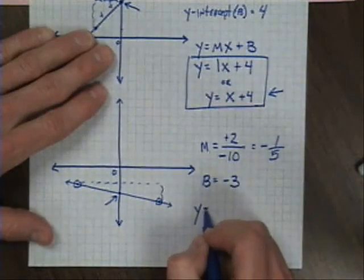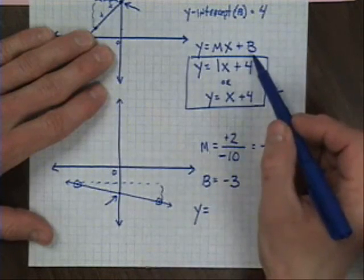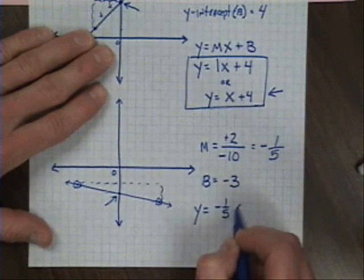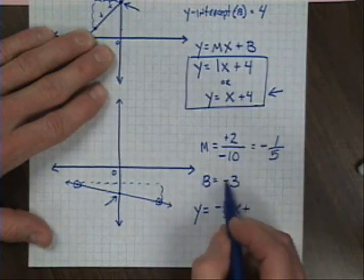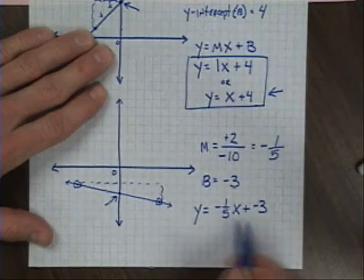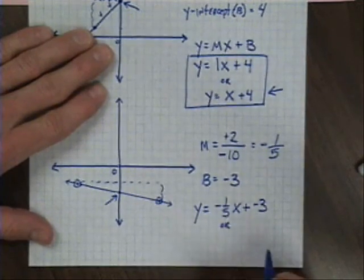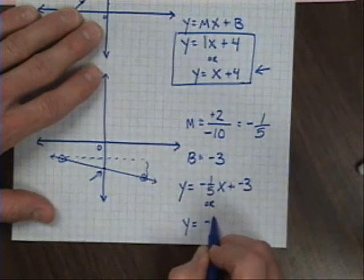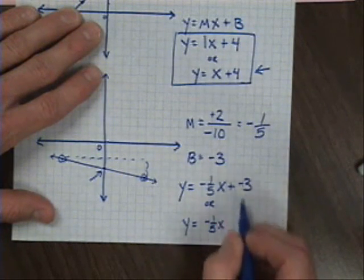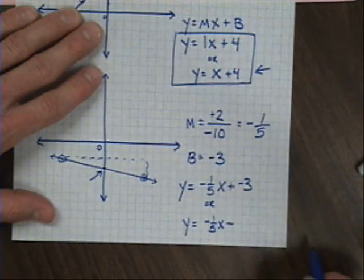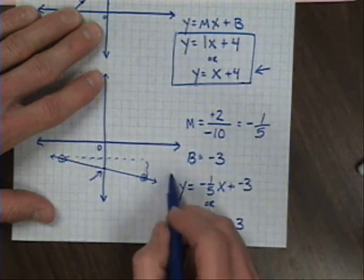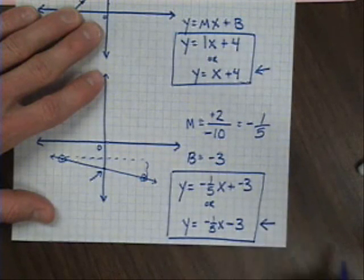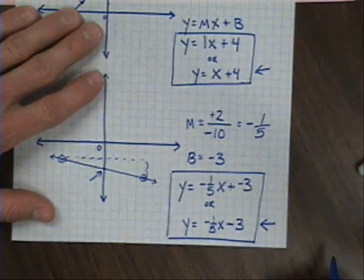So again, now I'm simply going to follow my mx plus b format, which we saw before. m is negative one-fifth x plus, and here I have a negative three. So this would be acceptable, and again, many math teachers would prefer a slightly cleaned-up version of this. y equals negative one-fifth x plus negative is commonly referred to as simply minus three. In my class, I would happily take both, but again, if you're looking for the better of the two answers, that would be the better of the two.